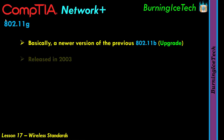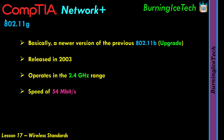The 802.11g standard was released in 2003, unlike the previous two which were released in 1999. It operates at the 2.4 GHz range — the same as 802.11b — so it will also tend to conflict with quite a lot of things out there. Unlike 802.11b, this newer 802.11g standard runs at a speed of 54 megabits per second, which basically matches that of the 802.11a standard.